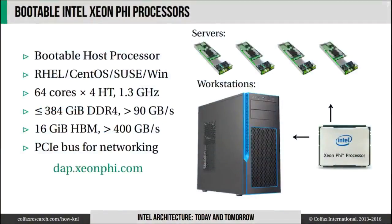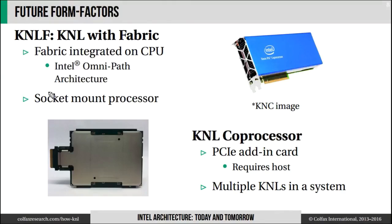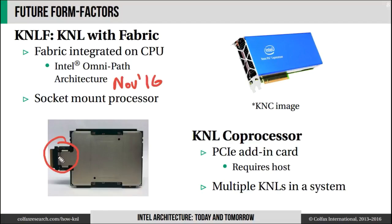The bootable form factor of Xeon Phi makes it very much like a standard CPU, but this is not the only form factor expected. Intel announced the KNL-F form factor: a bootable processor with integrated fabric. A high-performance interconnect is fused onto the chip, allowing you to build a cluster of servers with Intel Xeon Phi processors connected with a special interconnect offering very low latency and very high bandwidth, based on the Intel OmniPath architecture.